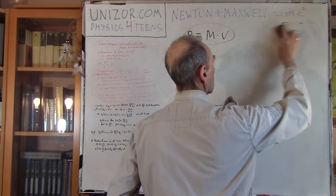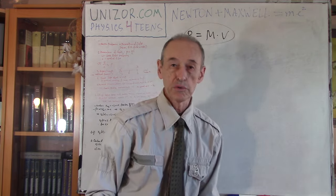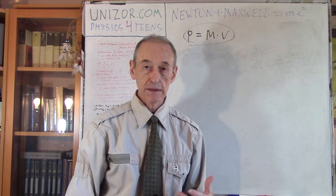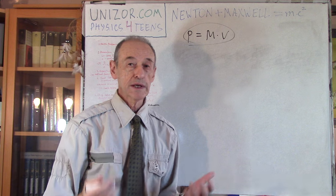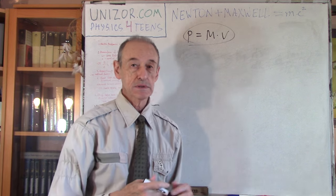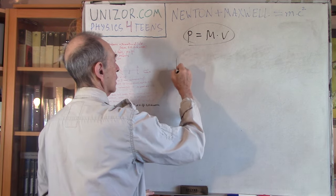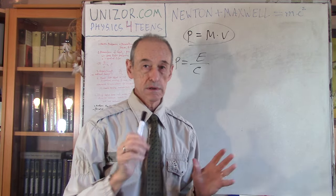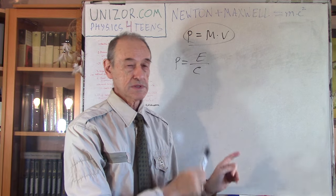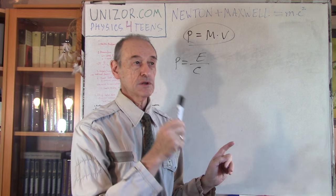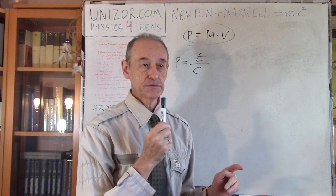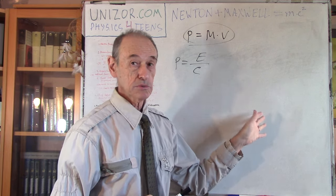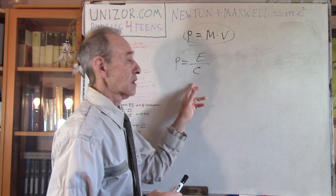The thing which I would like to borrow from electromagnetic field oscillations theory is the formula which relates the energy of light with its impulse. I will just write the formula — it's derived in another part of the course: Physics for Teens, the Waves part, chapter on electromagnetic field waves. In that chapter there are lectures about energy of light, momentum of light, and including the derivation of this formula.